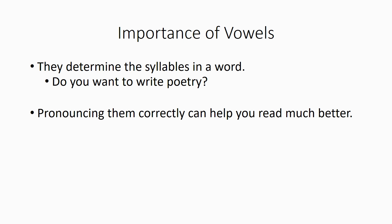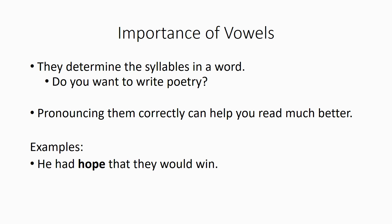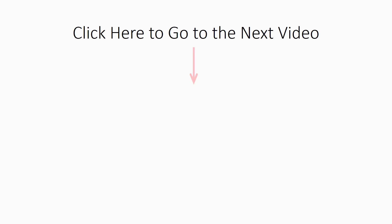Also, pronouncing vowels correctly can help you read much better. For example, if you say, He had hop that they would win, and his hopes were short — you're not going to understand anything you're reading, because you pronounced a word that should have a long vowel sound short, and a word with a short vowel sound long. It happens all the time. But if you say, He had hope that they would win, and his hops were short — now all of a sudden these sentences make sense. Click here to go to the next video in the series.